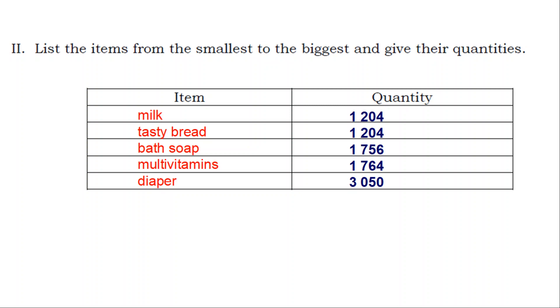List the items from the smallest to the biggest and give their quantities. Milk 1,204. Tasty Bread 1,204. Bath Soap 1,756. Multivitamins 1,764. Diaper 3,050.